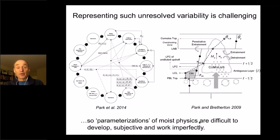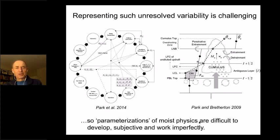Another issue is that we have to highly idealize the representation of these processes. The picture on the right shows a parameterization of shallow cumulus convection — cumulus clouds that are not heavily precipitating and rise only into the lower troposphere. The horizontal lines are the edges of grid levels in the model. We've had to highly idealize all of the processes and represent them in very simple mathematical terms that necessarily only capture some of what is really happening.